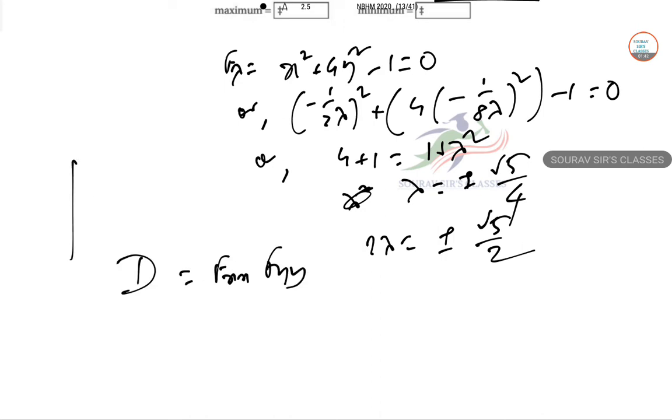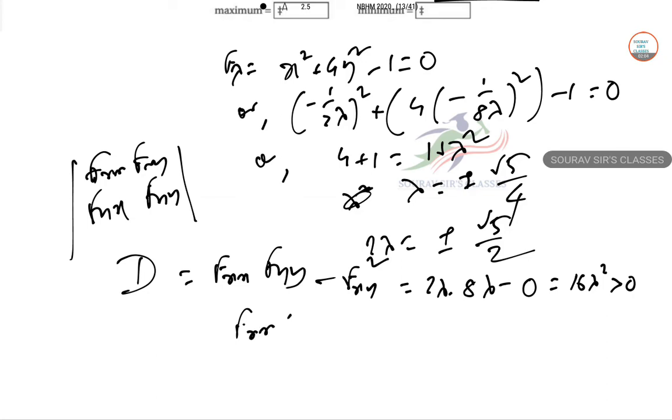Now the Hessian determinant equals fxx times fyy minus fxy times fyx squared. So 2 lambda times 8 lambda minus 0, which equals 16 lambda squared. This is positive. For a maximum, fxx has to be negative. For a minimum, fxx has to be positive.